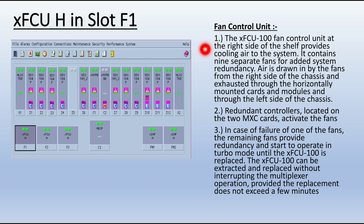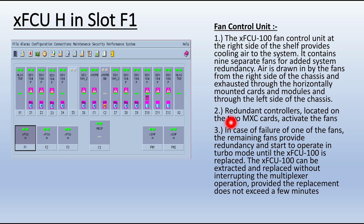There is a fan control unit. The XFCO 100 fan control unit at the right side of the shelf provides cooling air to the system. It contains 9 separate fans for added system redundancy. Air is drawn in by the fans from the right side of the chassis and exhausted through the horizontally mounted cards and modules into the left side. Slots F1, F2, and F3 are for the XFCO card. A redundant controller located on the XMCP card activates the fans. In case of a failure of one fan, the remaining fans provide redundancy and start operating in turbo mode until the XFCO 100 is replaced. The fan control unit can be extracted and replaced without interrupting multiplexer operations, and replacement takes no more than a few minutes.